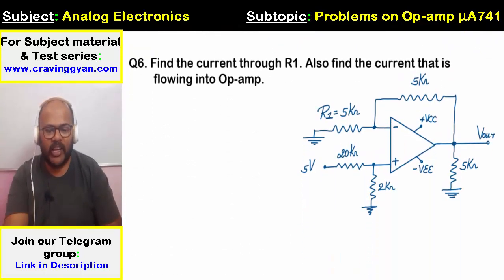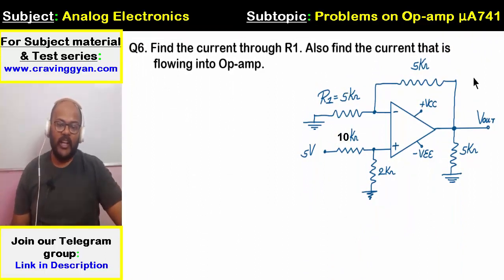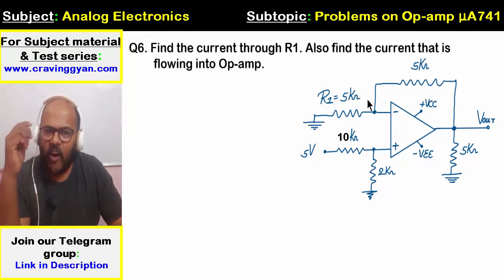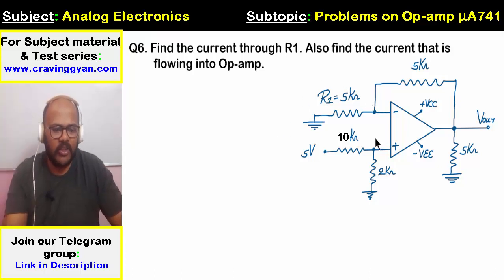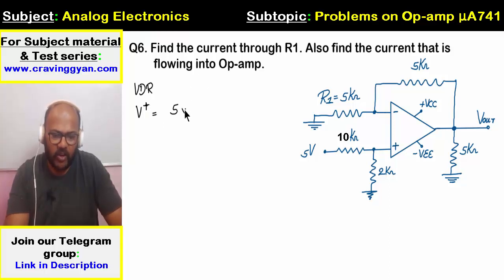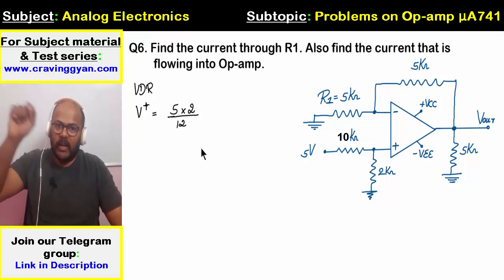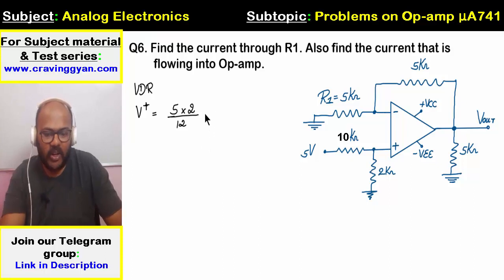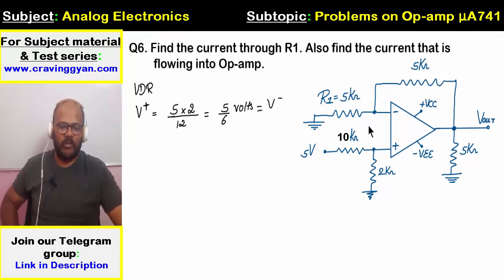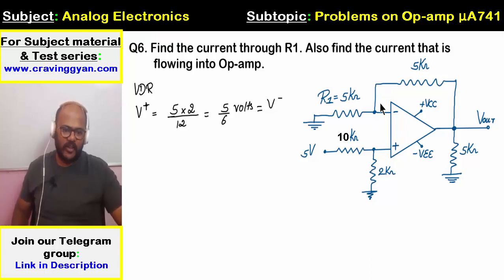Sixth question: find the current through resistor R1 and the current flowing into the op-amp. We use the voltage divider rule to find the non-inverting terminal potential: V+ = 5V × 2k / (10k + 2k) = 5 × 2/12 = 5/6 volts. By virtual short, the inverting terminal is also at 5/6 volts.